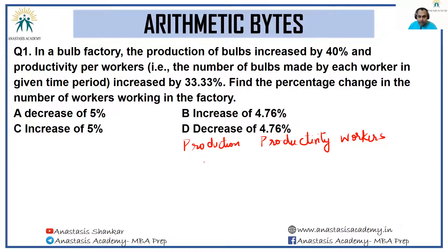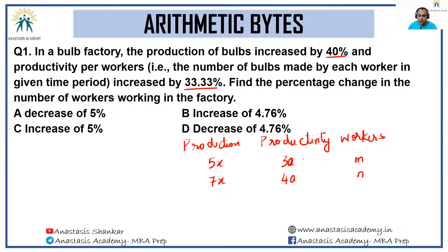Previously if the production was 5x, new production is 7x because it has increased by 40 percent. Productivity earlier if it was 3a, now it is 4a because it has increased by 33.33 percent. Workers: if initially they were m, now they are n. Productivity into number of workers should give the total production.